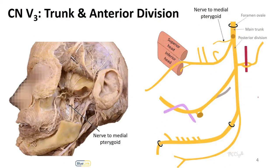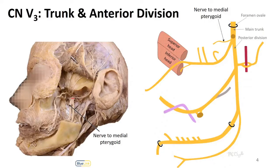We're going to start off here with branches that come directly from the trunk, and in terms of muscles and mastication, there is one branch that we need to be concerned about here, which is the nerve to the medial pterygoid. This comes off very close to the foramen ovale, so it's a little harder to visualize in a donor image, but we do have a little part of it that is peeking out right here. This is the posterior division, and here is that anterior division. Off of the trunk would be much more superior. You can imagine the nerve to the medial pterygoid coursing posterior to the posterior division to then reach the medial pterygoid muscle.